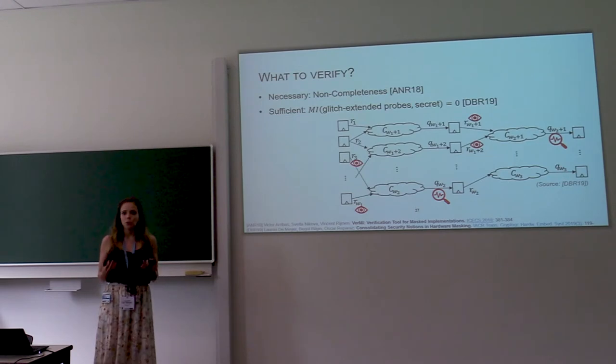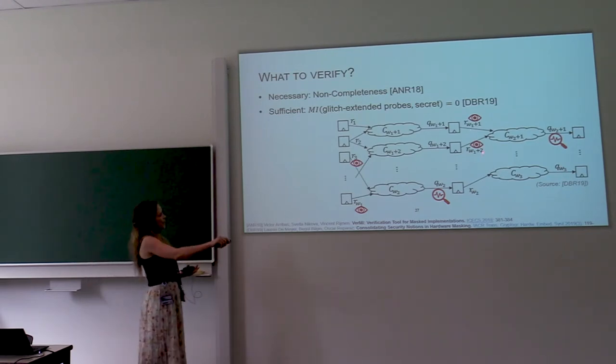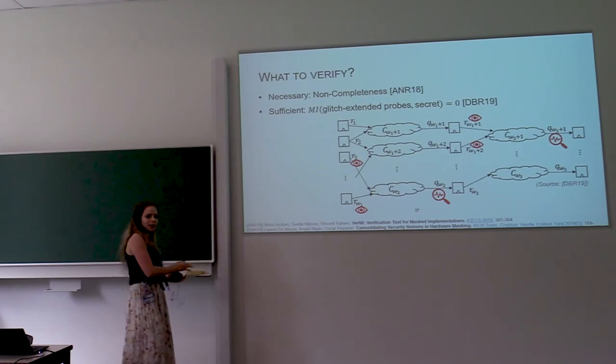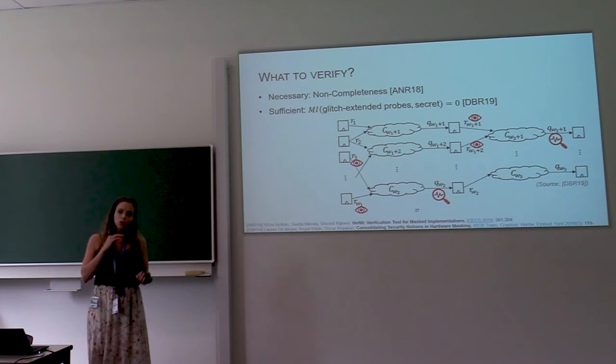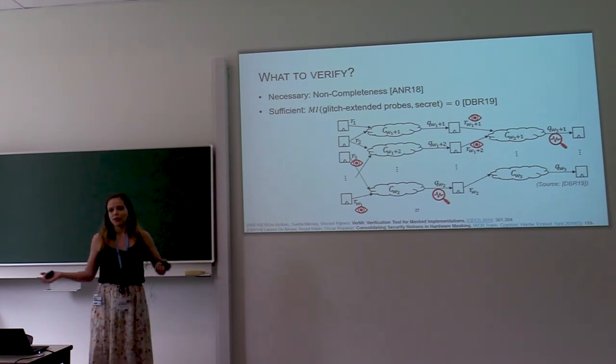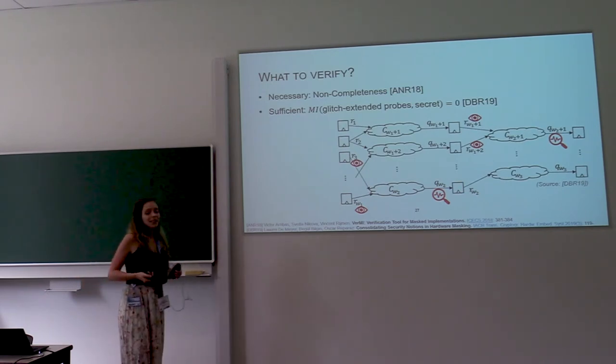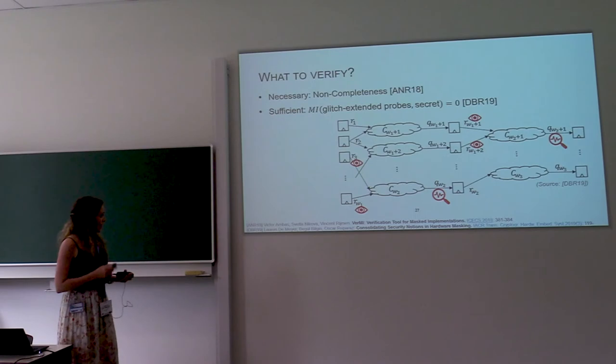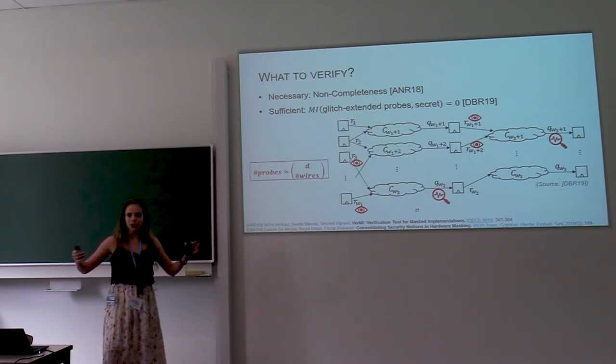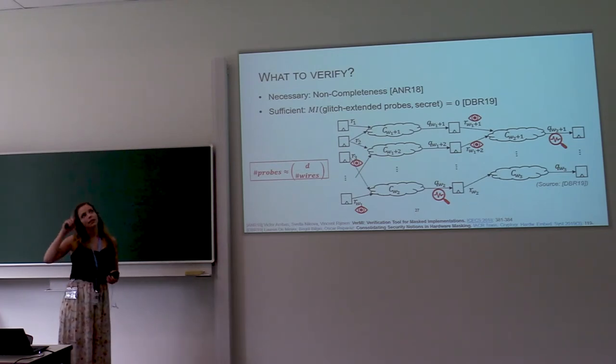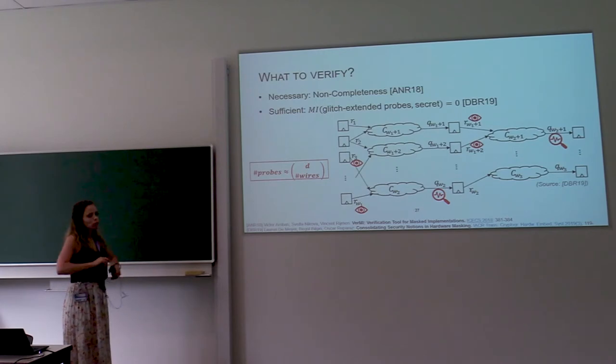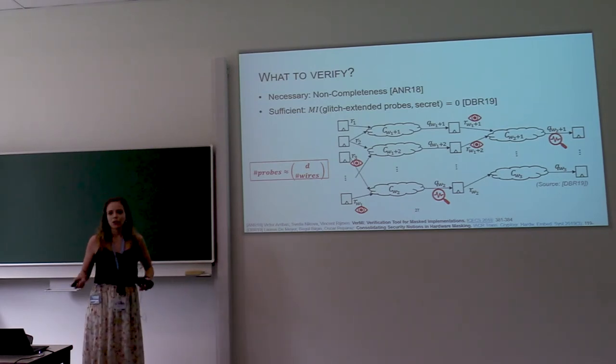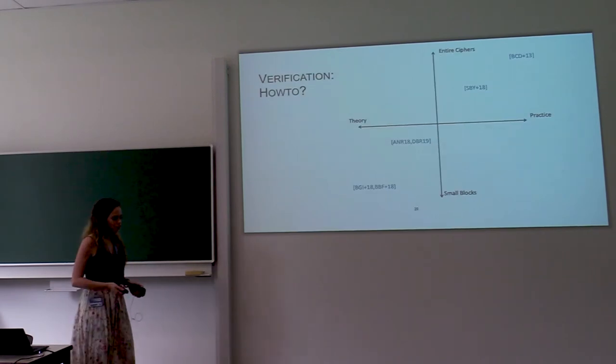So let's look again at the adversary model. What information does our attacker have? So that was those glitch-extended probes. So we actually need to require that the mutual information between the glitch-extended probes and your secrets is zero. If you don't know what mutual information is, you can think of it as a statistical independence. So that's a nice condition that we can check if you want to be sure that our implementation is not going to leak. But keep in mind that there are a lot of ways to probe a circuit. So the number of possible probes, if you attack something at d-th order, is the combination of D out of the total number of wires in your circuit. So this is a huge number and it grows, again, very fast with the verification order D.